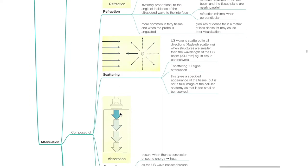Scattering: ultrasound waves are scattered in all directions when structures are smaller than the wavelength of the ultrasound beam, such as in tissue parenchyma. Increased scattering results in increased signal attenuation. This gives a speckled appearance of the tissue, but is not a true image of the cellular anatomy, as that is too small to be resolved.